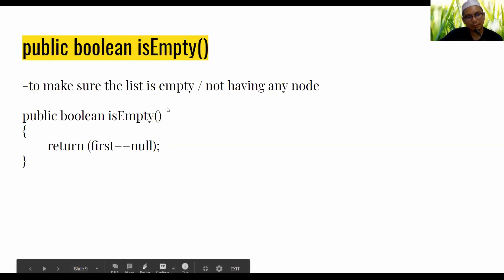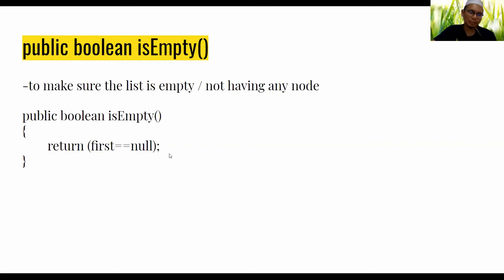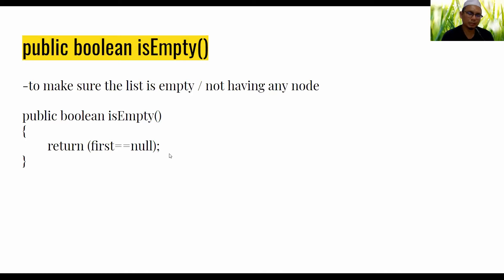The isEmpty method checks whether the first node is null. It returns true if first equals null, otherwise it returns false.